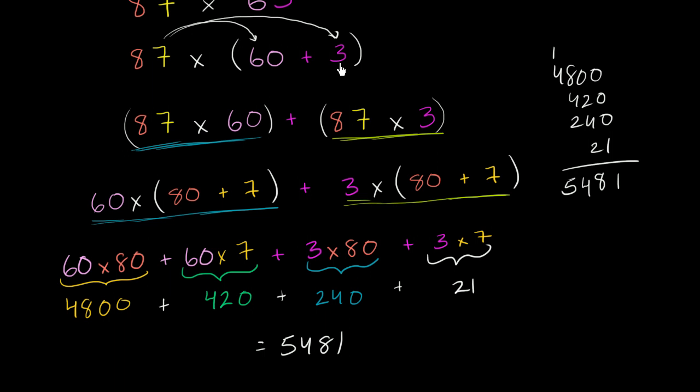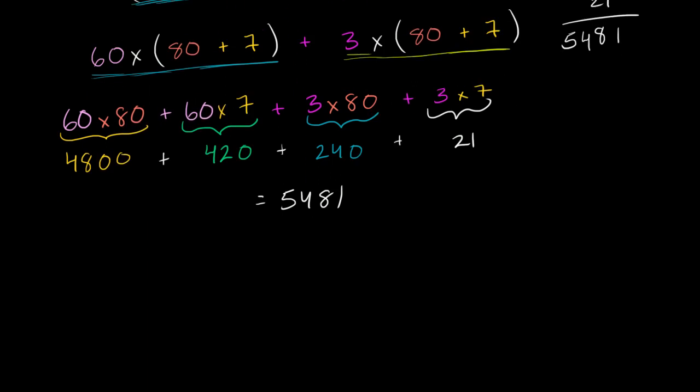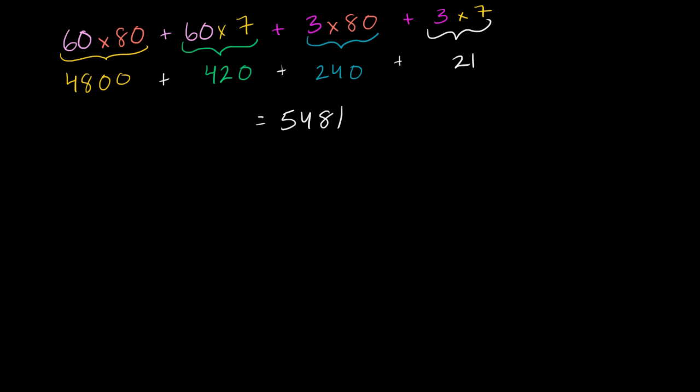And you might say, gee, this was a bit of a pain to have to do the distributive property over and over again. Is there a simpler way to maybe visualize this? And there is. You could actually write this as a grid. So we could say, we're multiplying 87 times 63, we could write like this. We could say it's 80 plus 7, 80 plus 7 times 60, 60 plus 3, plus 3. And then you can set up a grid like this. It's two digits by two digits, so it's going to be a two by two grid, two rows and two columns.